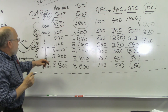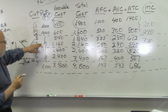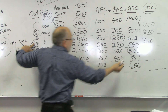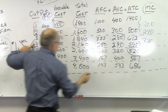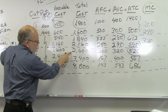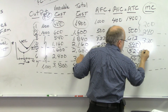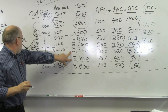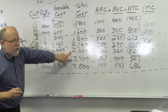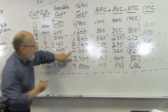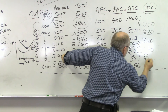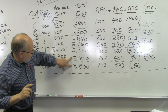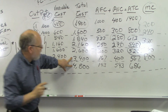Going from output 4 to 5, we get $2,600 subtracted from $3,400, giving a marginal cost of $440. Going from 5 to 6, the marginal cost is $800. And subtracting from 6 to 7, we get $1,400.